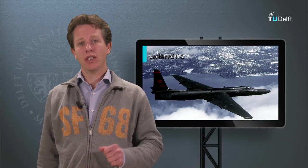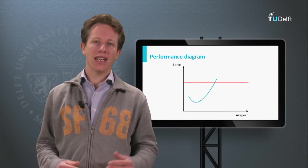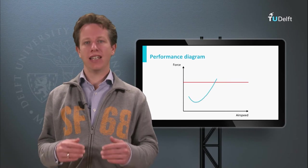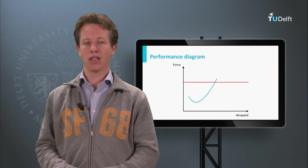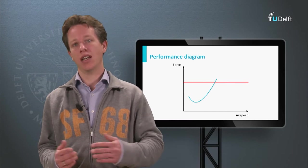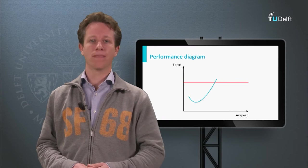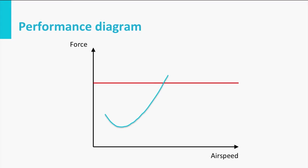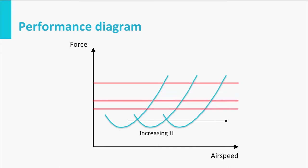In the previous item we derived how the performance diagram changes as a function of altitude. When flying at a constant angle of attack and increasing altitude, the airspeed must increase to maintain sufficient lift. As a consequence, the aerodynamic drag remains the same due to the fact that airspeed increases and air density decreases — in essence, the dynamic pressure stays constant. As a result, the drag curve shifts to the right for increasing altitude. At the same time, the engine delivers less thrust, mainly due to a smaller mass flow through the engine.